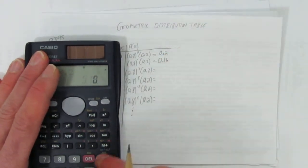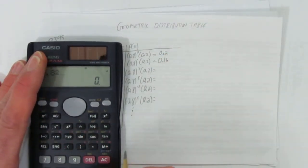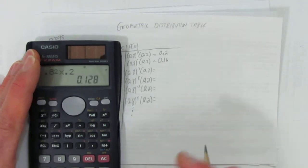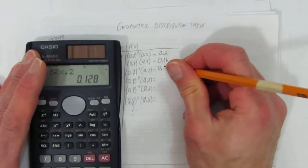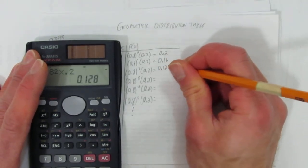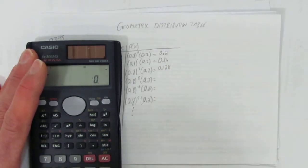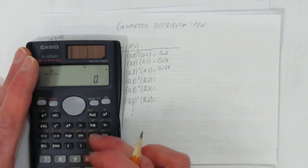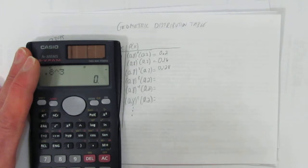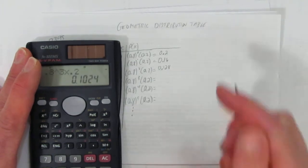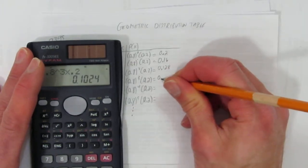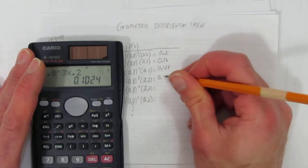The next one is 0.8 squared times 0.2, and you get 0.128. The next one is 0.8 cubed times 0.2, and you get 0.1024.